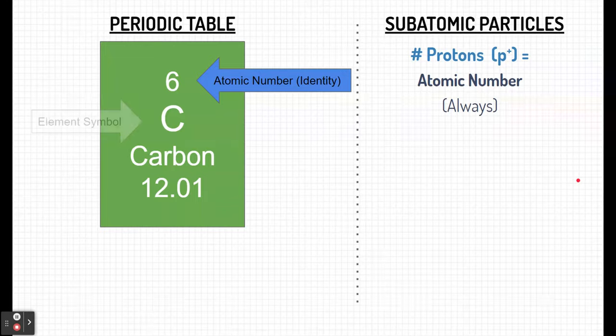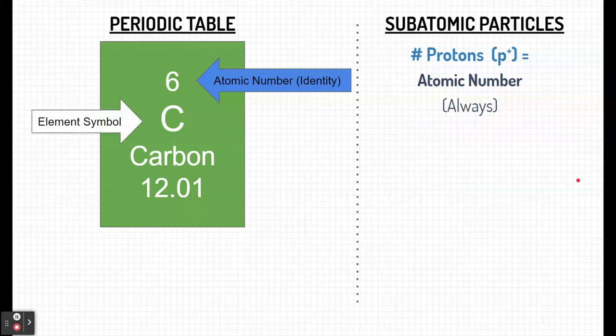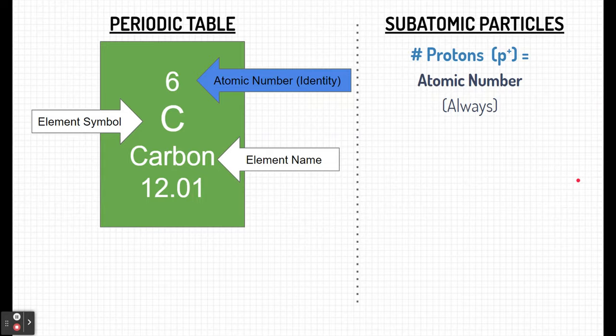So this number six lets us know that this is carbon, and the element symbol for carbon is C. And this is the element name, also typically written on the periodic table.